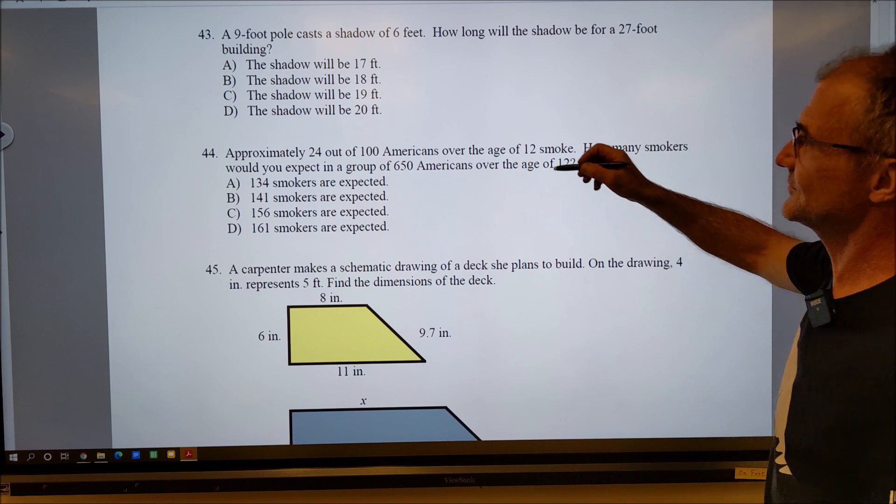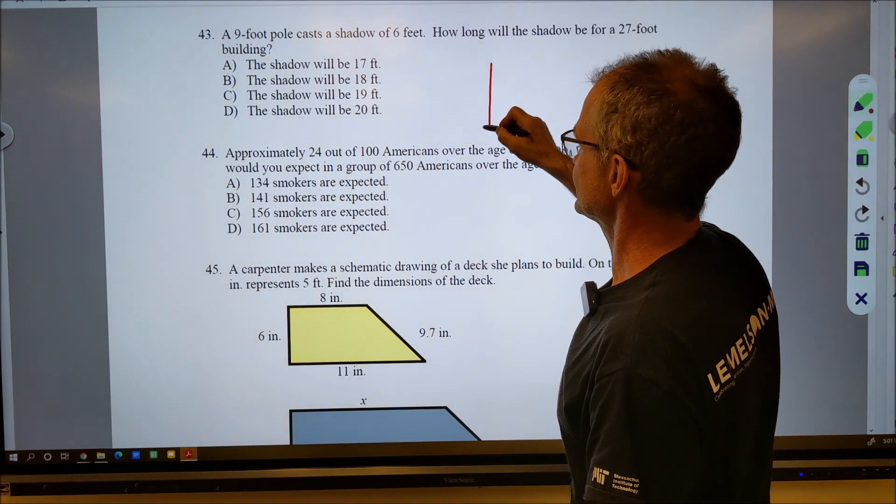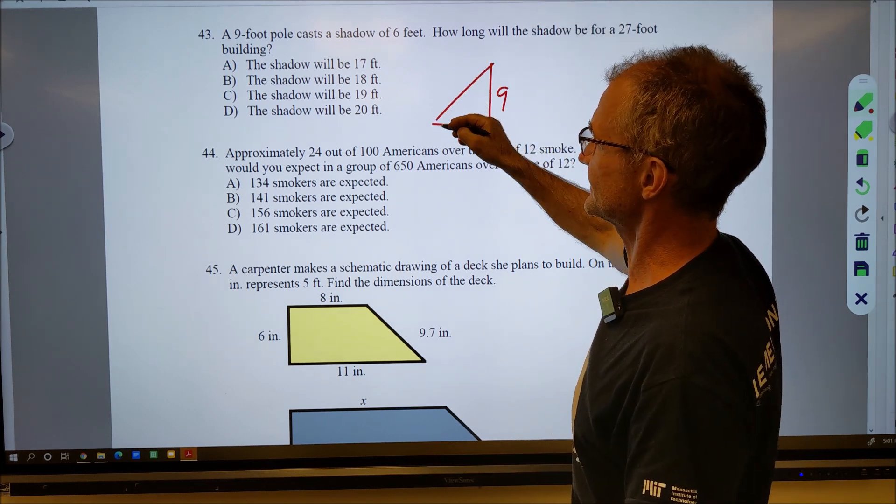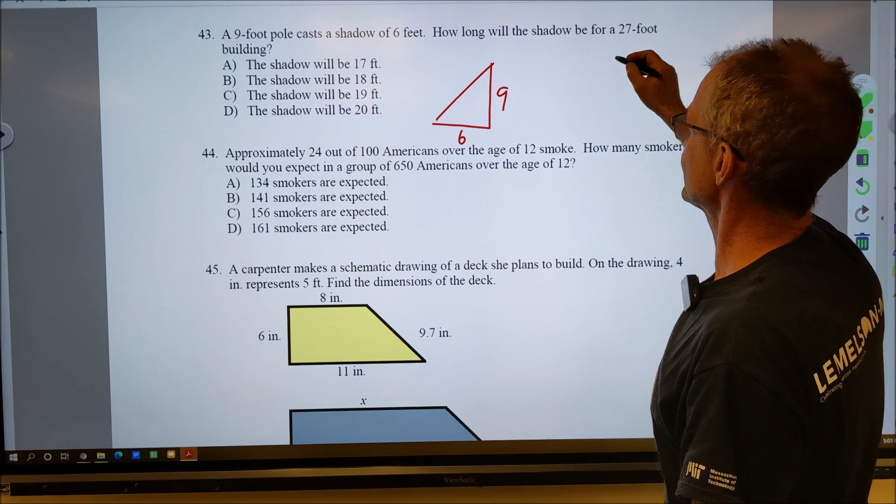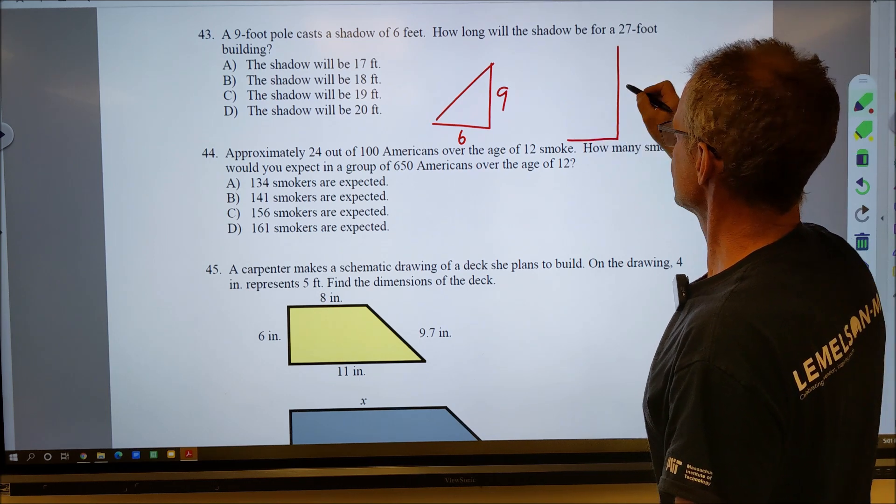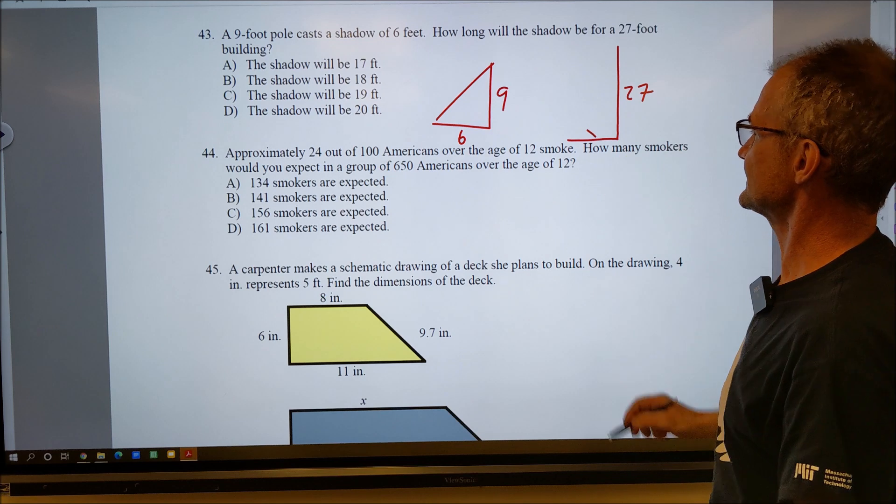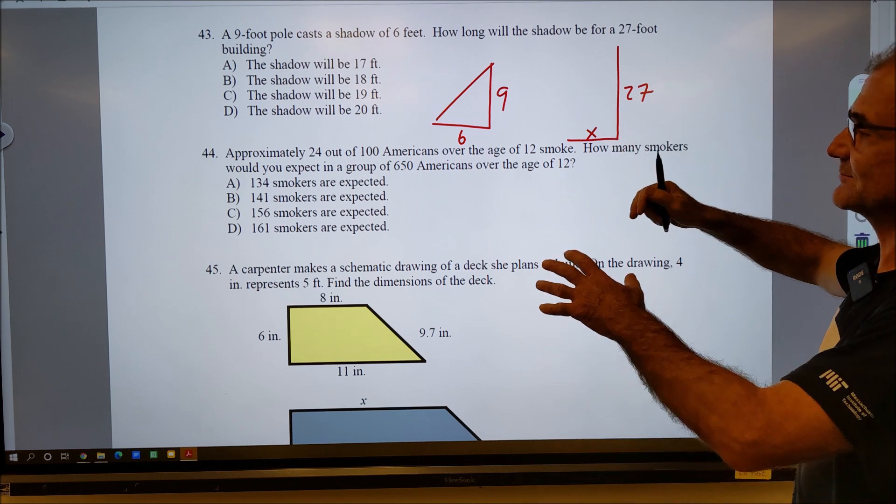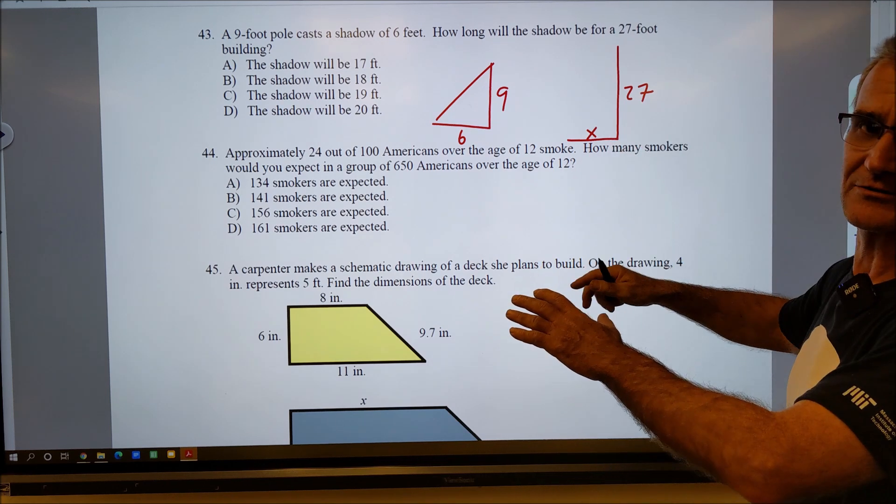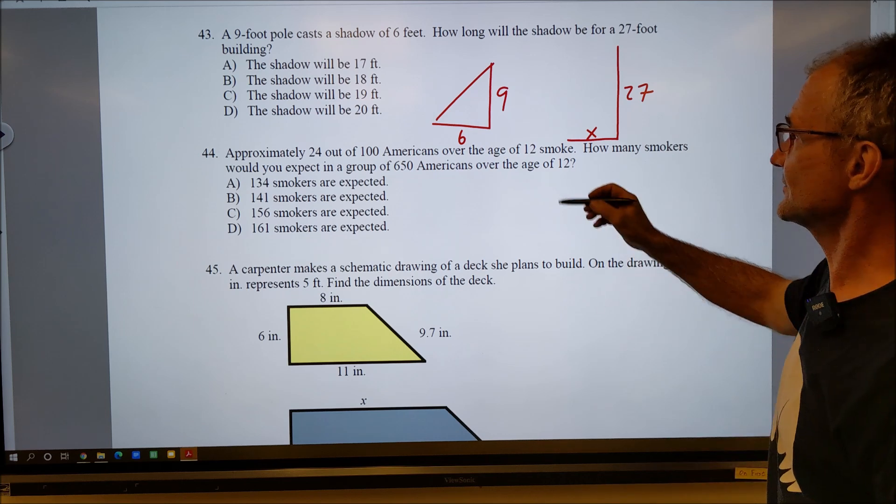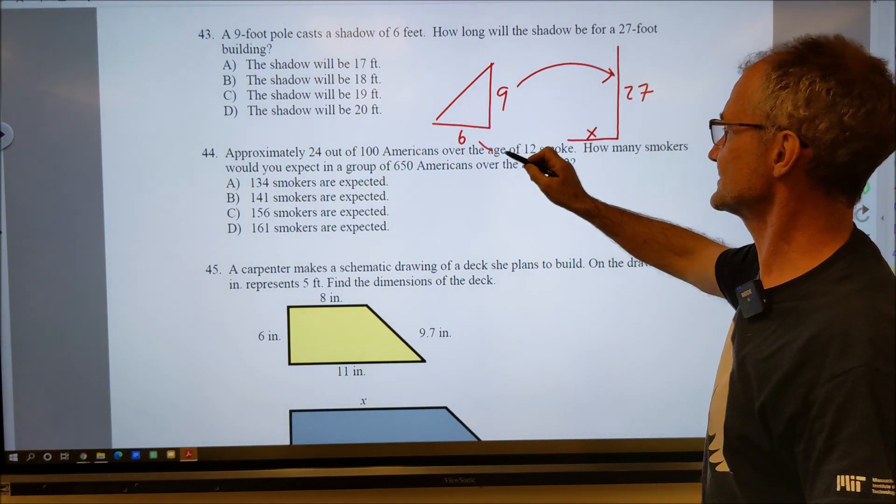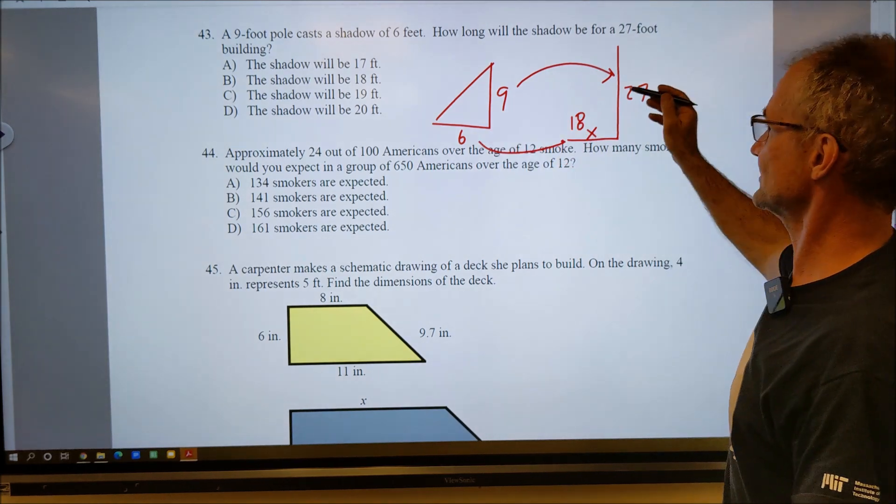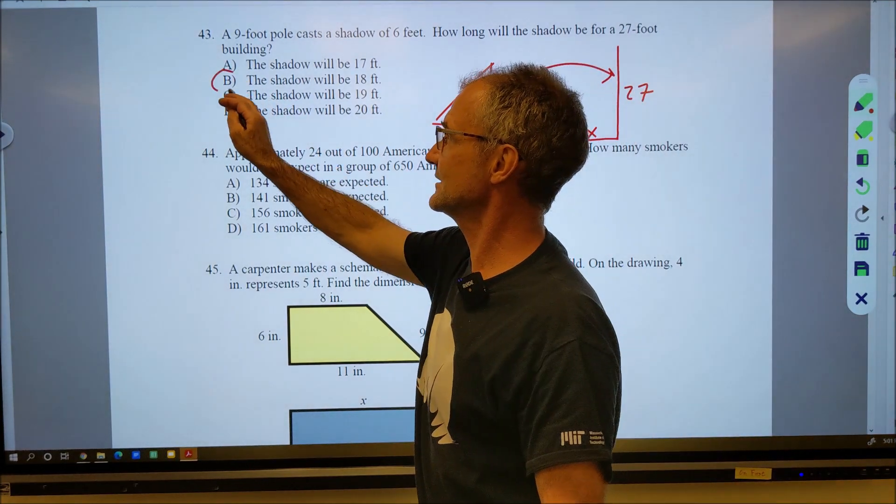Number 43: A nine-foot pole casts a shadow six feet long. So this casting a shadow, here's the pole, casting a shadow down six feet long. How long will a shadow be for a 27-foot pole? So now I have a 27-foot pole, how long is that shadow? They're going to be similar triangles because they're the same angles. They're not going to have the same lengths—that would be congruent triangles—but the same angles would make them similar. So nine times three is 27, so six times three is 18. So 9 is to 6 as 27 is to 18. So the correct answer here is B.